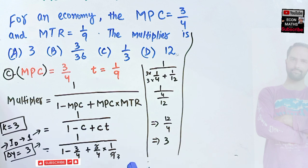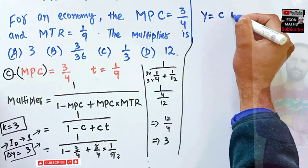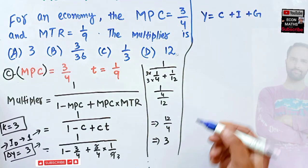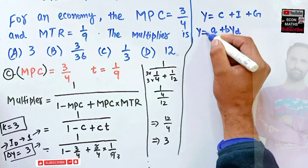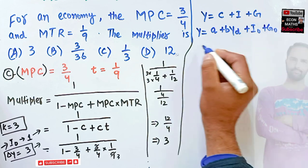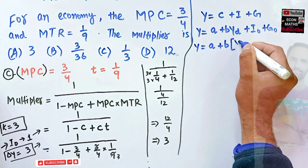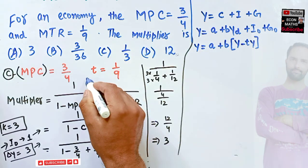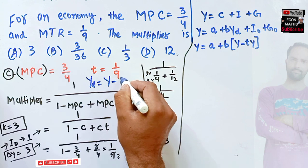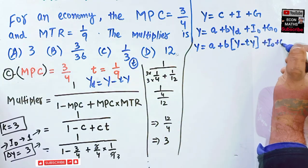We can also derive this formula. Our GDP equation is Y equals C plus I plus G. The consumption function is C equals A plus B times Y_D, where Y_D is disposable income. Investment and government spending are autonomous. Disposable income equals Y minus T times Y, where T is the marginal tax rate.